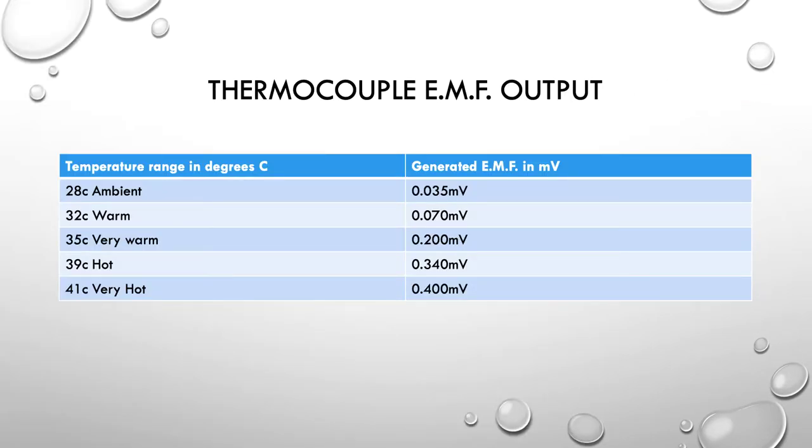So putting that into the table here, we can see there is a clear relationship. As we go from 28 C up to 41, so ambient, warm, very warm, hot and very hot. You can see our millivolt reading has also increased with that.